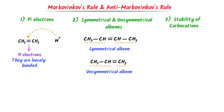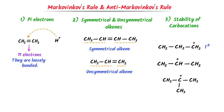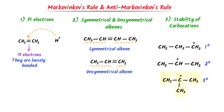Thirdly, understanding the stability of carbocations. Let's consider these carbocations. This is the first degree carbocation because this positive carbon is attached to only one carbon. This is the second degree carbocation because this positive carbon is attached to two other carbon atoms. Remember that third degree carbocation is more stable than second degree carbocation, and second degree carbocation is more stable than first degree carbocation, because third degree carbocation has more positive inductive effect.